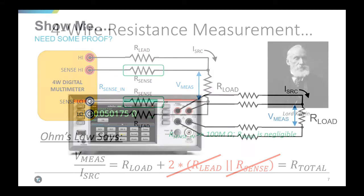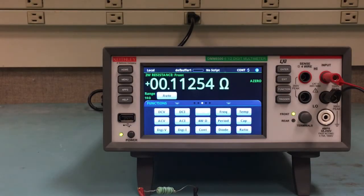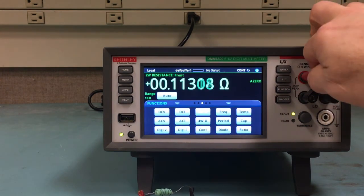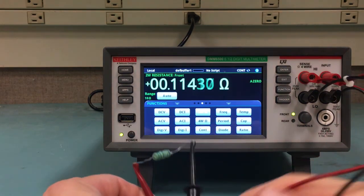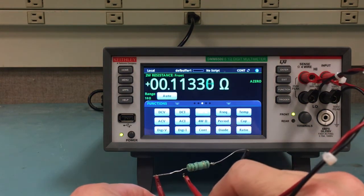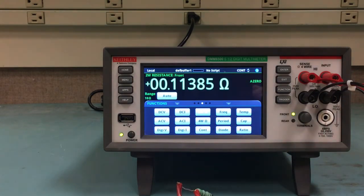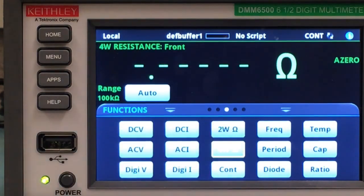Let's perform the four-wire measurement. The first step is to connect my second set of leads to the sense inputs on the front of the DMM 6500. I then use those leads to clip very closely to the resistive body of my device under test. I can then change my measurement function to four-wire.